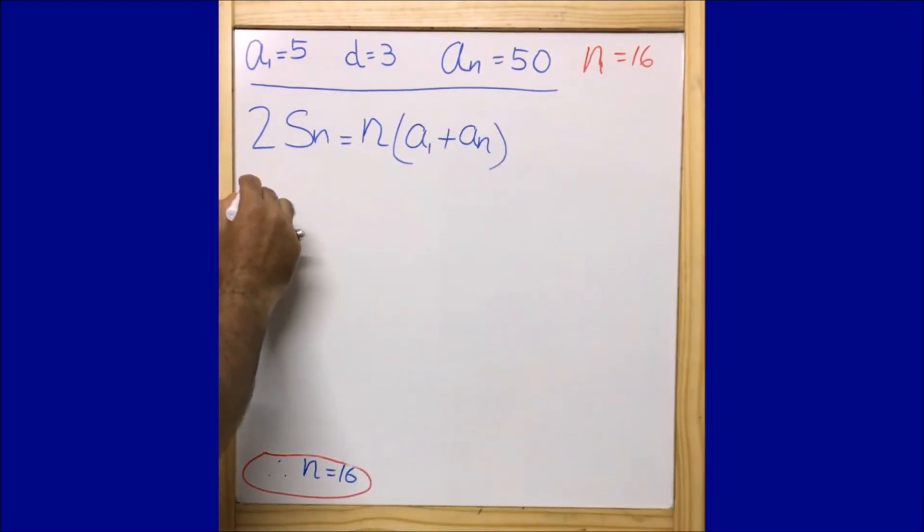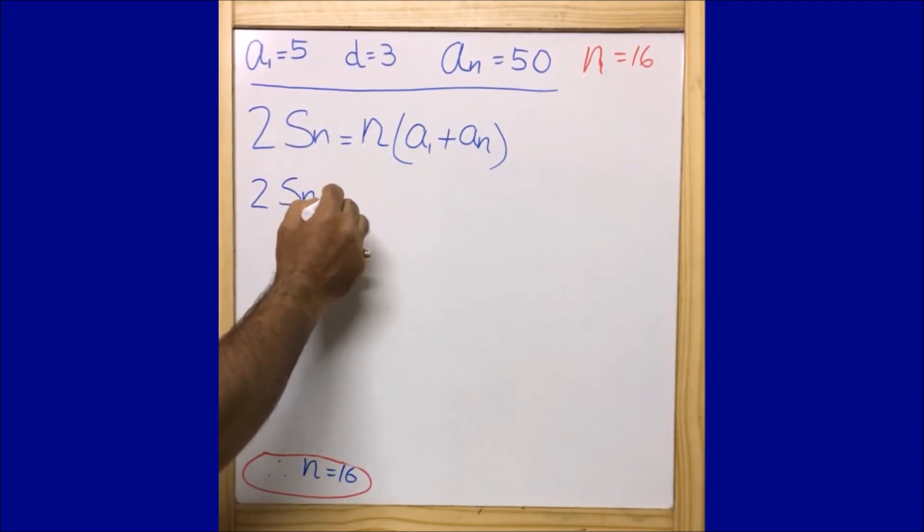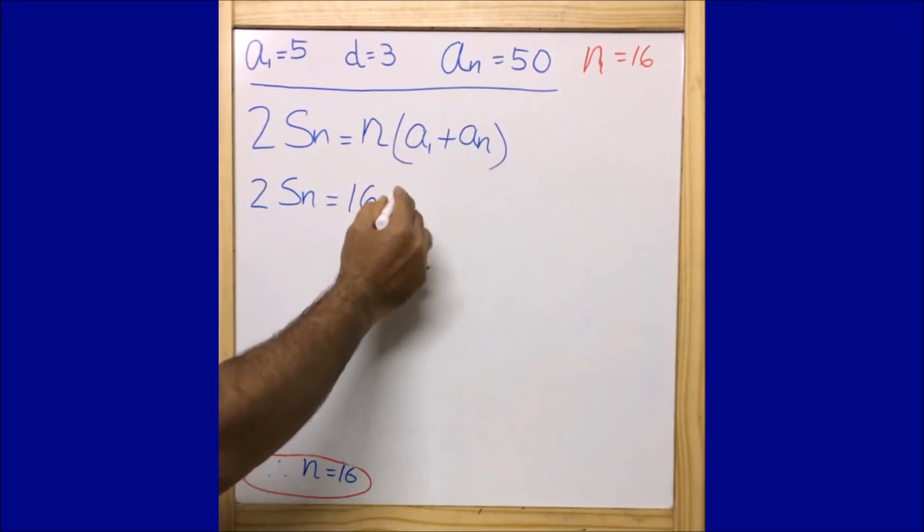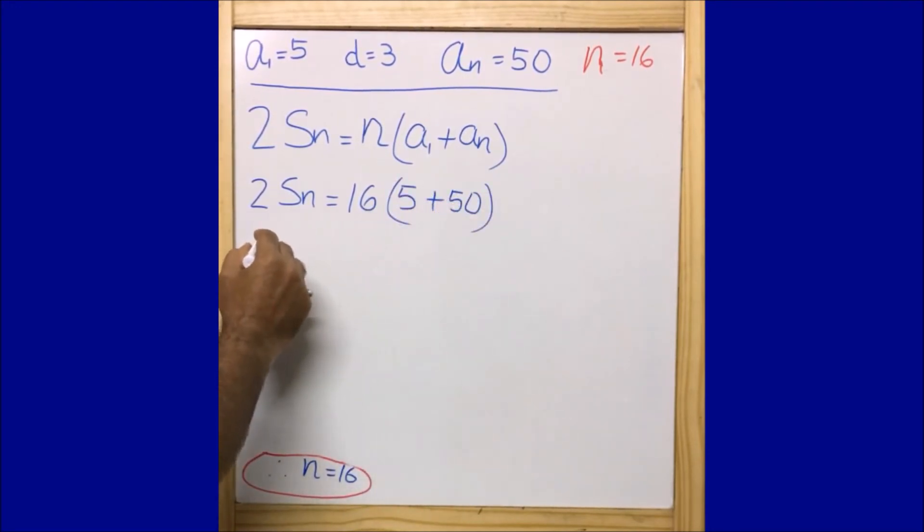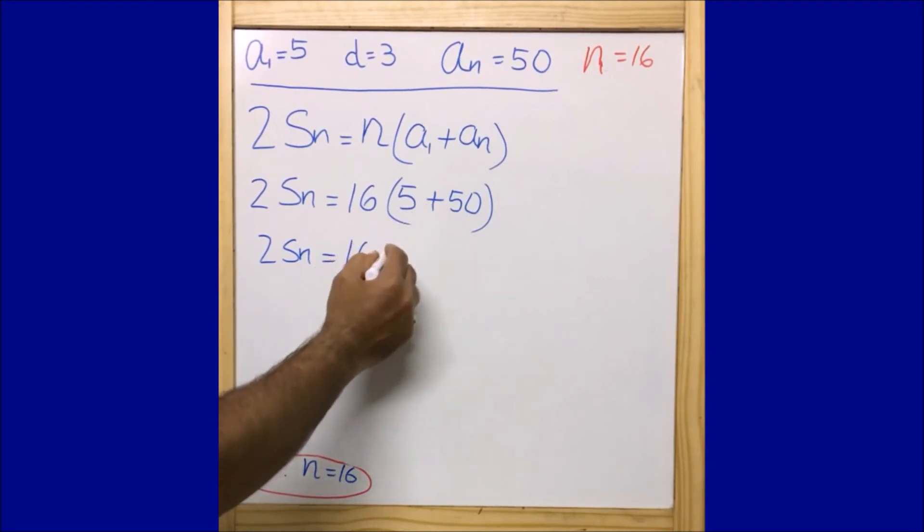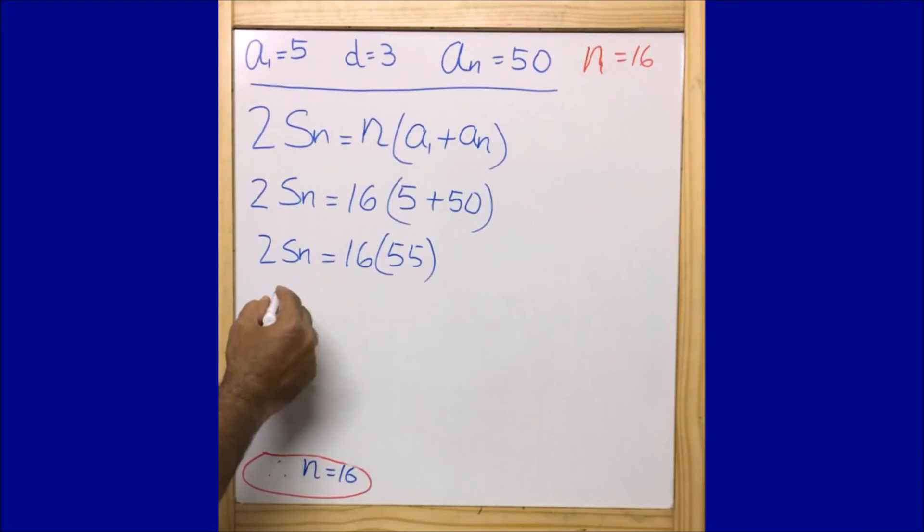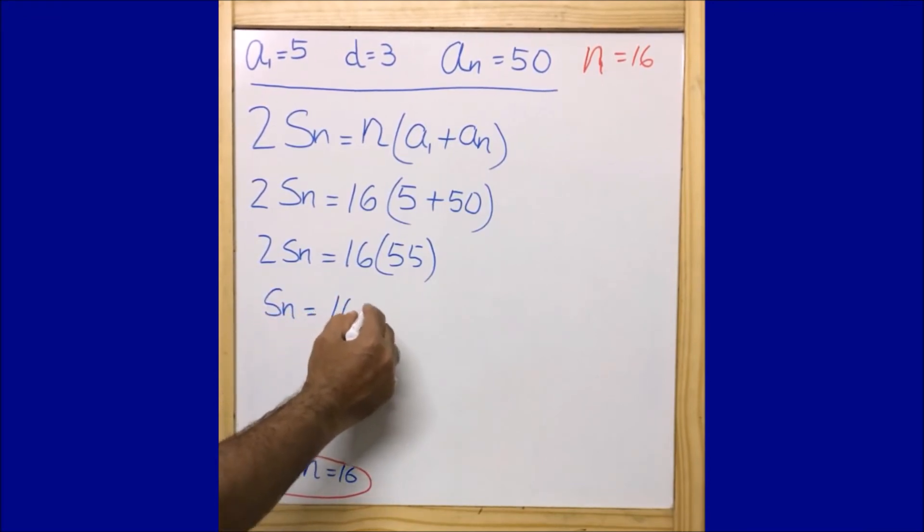Now I can write: 2Sₙ equals n is 16, a₁ is 5, plus 50. Or I can write: 2Sₙ equals 16 times 55.